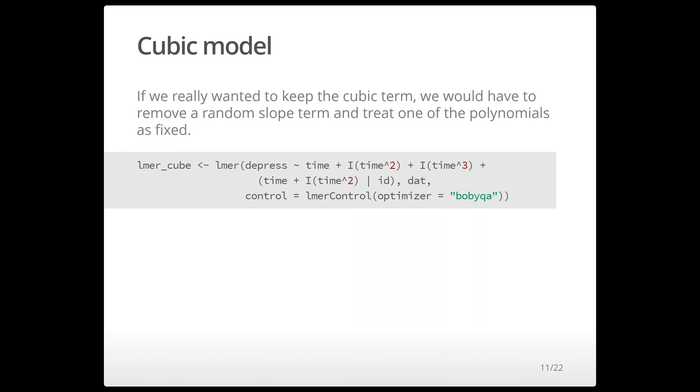If we did want to keep the cubic term we would have to remove the random slope for one of our polynomial terms and treat that polynomial as fixed. And so you see this does converge. I had to change the optimizer but once I did it converged.